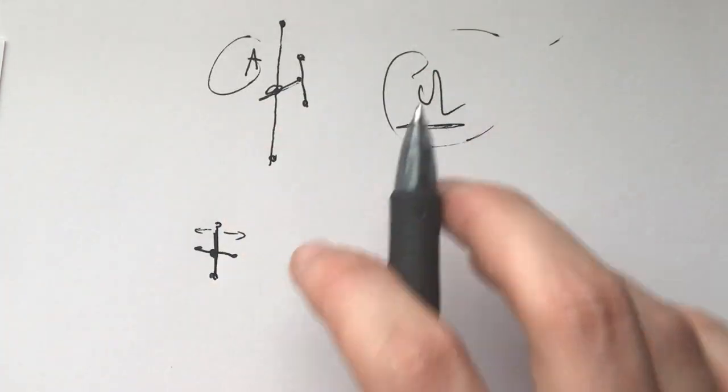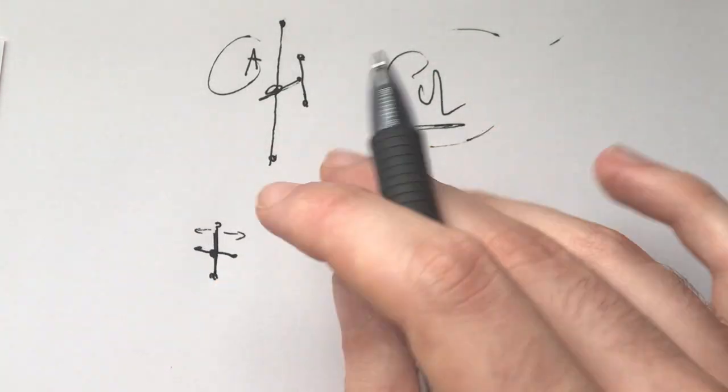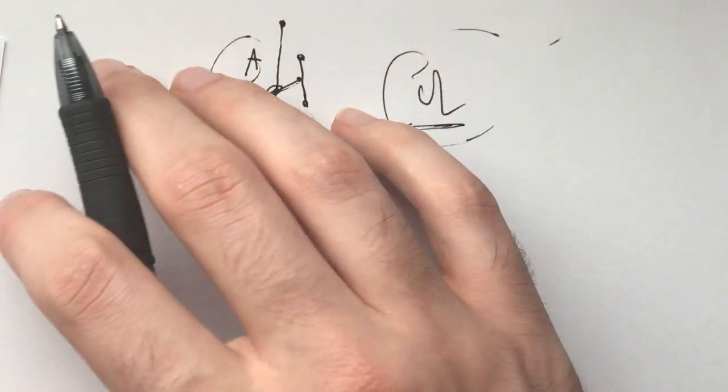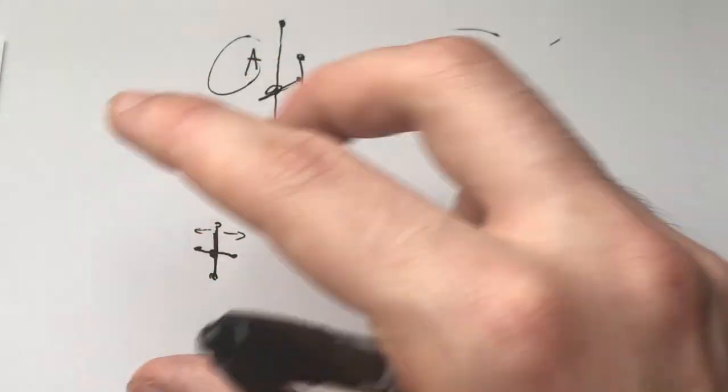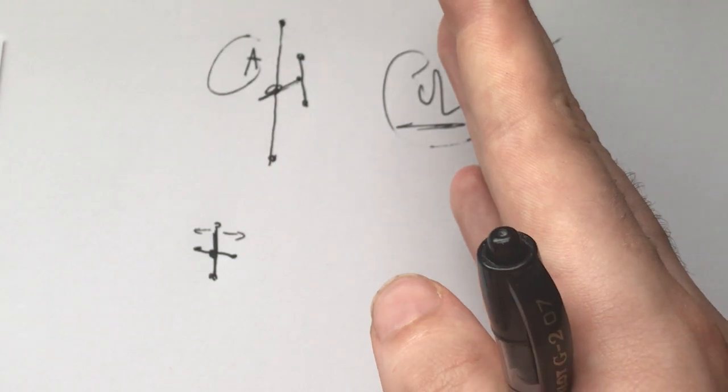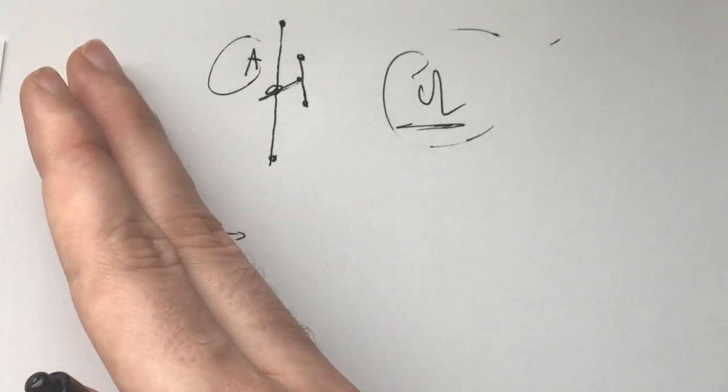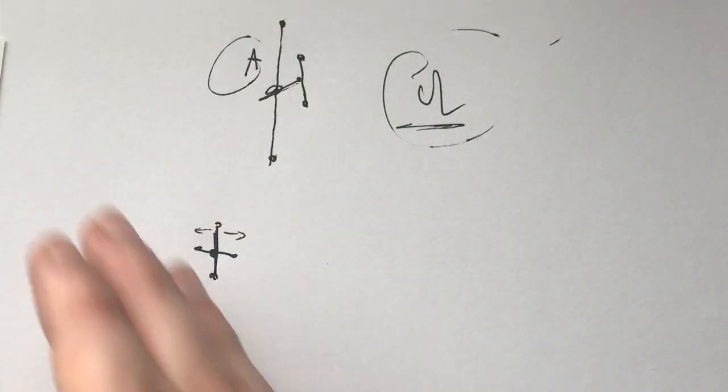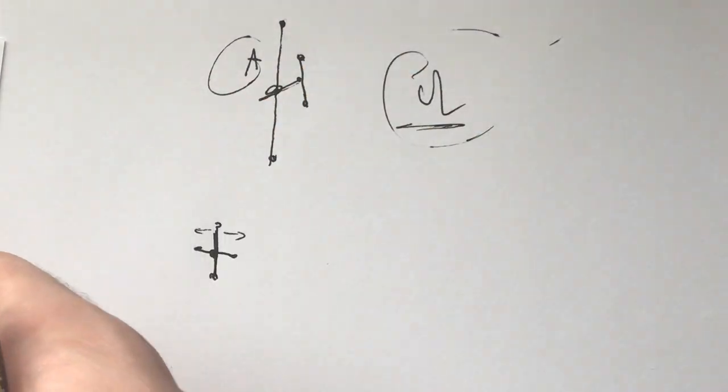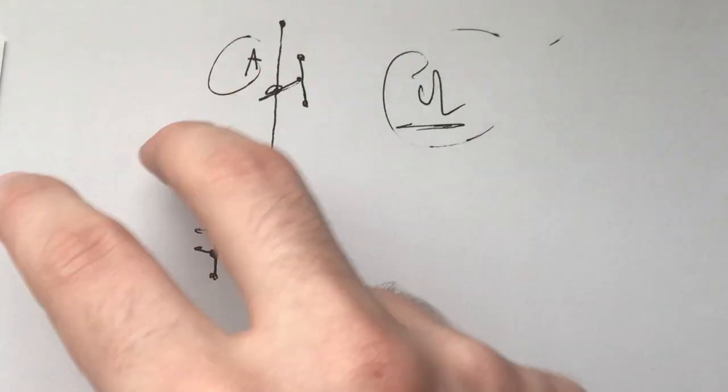One way of thinking about this is: if it's finite, I can pick some point somewhere that's like the final point, and then maybe there's a point behind it. What does that finality look like?